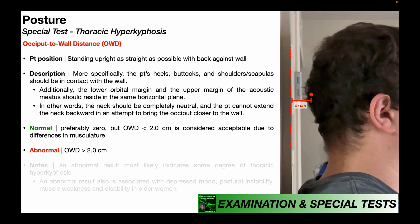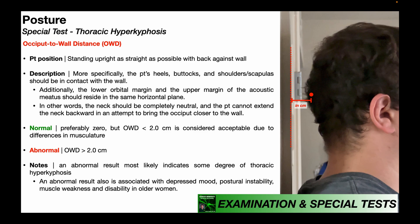You do need to take that result into consideration with respect to your specific patient. An abnormal result most likely indicates some degree of thoracic hyperkyphosis, but an abnormal result is also associated with a depressed mood, postural instability, muscle weakness, and disability, particularly in older women.